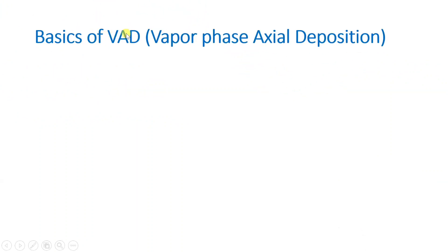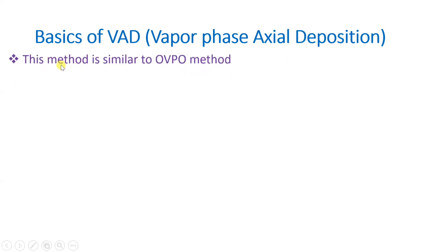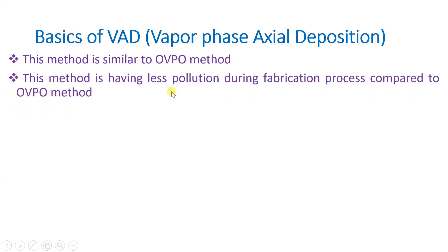When we talk about VAD, it is the Vapor Phase Axial Deposition method which we use to fabricate optical fiber, and this method is very similar to the OVPO method. This method has less pollution during fiber fabrication compared to OVPO. In OVPO we have Outside Vapor Phase Oxidation, while in VAD we don't have outside vapor phase oxidation.